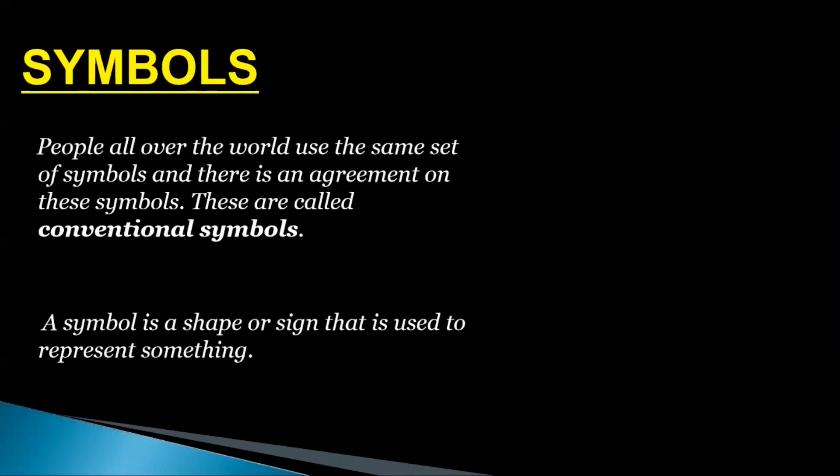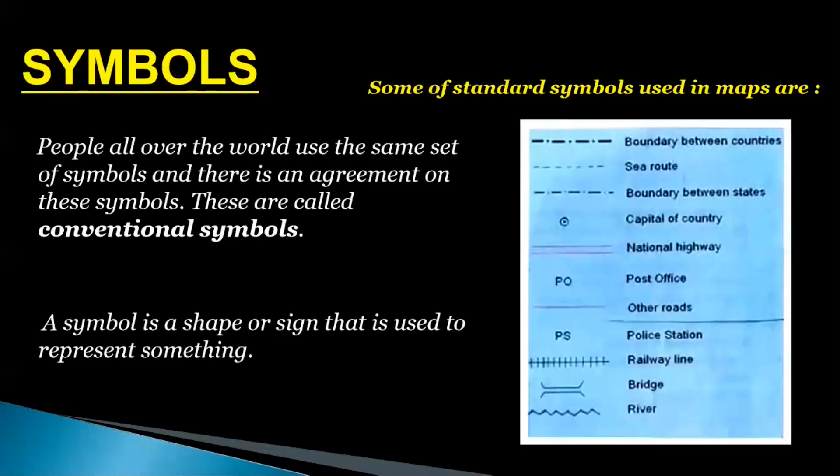Symbols. Maps show various features, but it is impossible to show the actual shapes and size of trees, buildings, villages, etc. in a map because of limited space. People all over the world use the same set of symbols and there is an agreement on these symbols. These are called conventional symbols. So a symbol is a shape or sign that is used to represent something. The boundaries of a country are shown by a line made up of dots and dashes, as you can see in the picture. One must know about these signs to read the map correctly.